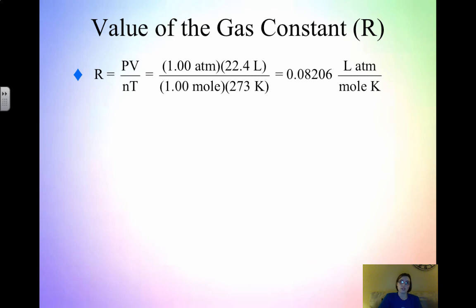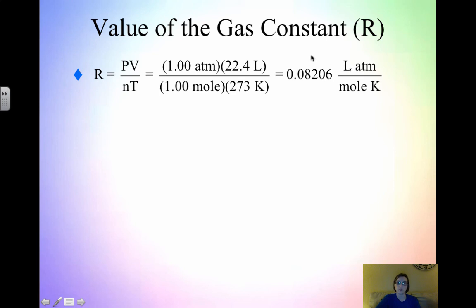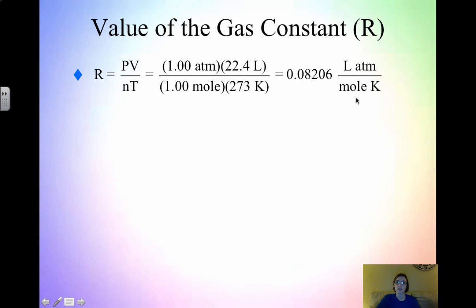The value of the gas constant R can be derived using standard temperature and pressure values: 1 atm for pressure, 22.4 liters for molar volume, 1 mole for N, and 273 Kelvin for T. Dividing and multiplying gives us R = 0.08206 L·atm/mol·K. This is the value of R we typically use, taken to four significant figures, and it's on your equations and constants sheet.